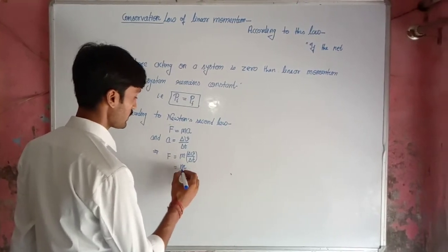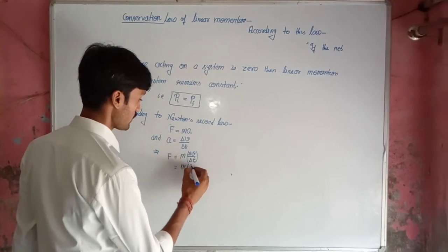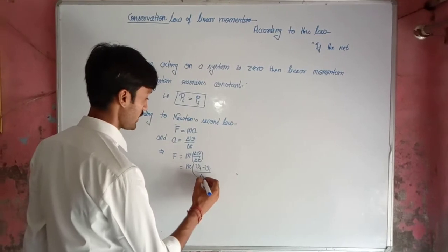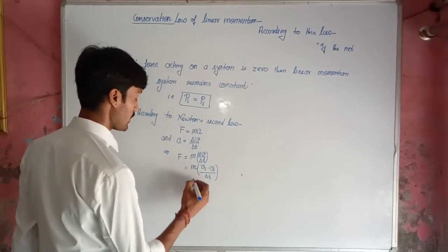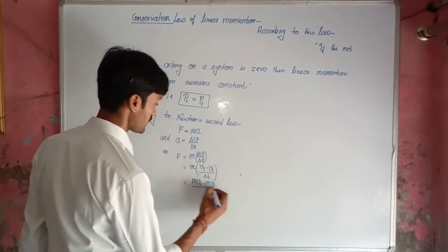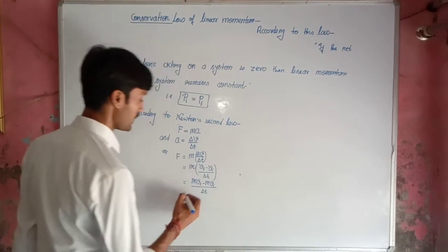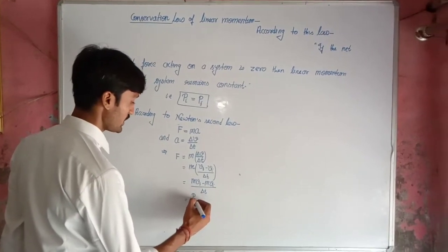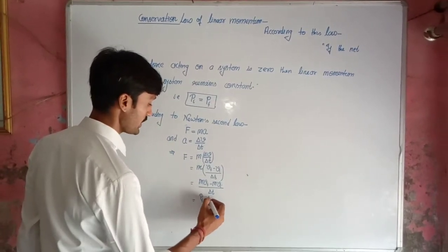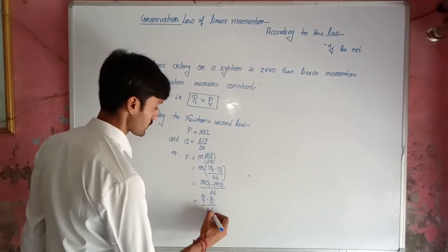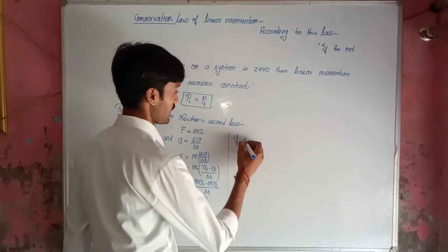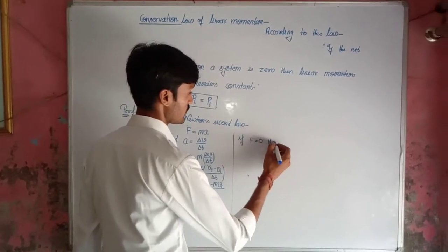We can write this as M multiplied by V-final minus V-initial, divided by delta T, which gives us M·V_F minus M·V_I divided by delta T. This is nothing but the final linear momentum of the system minus the initial momentum of the system. If F is equal to zero, then...